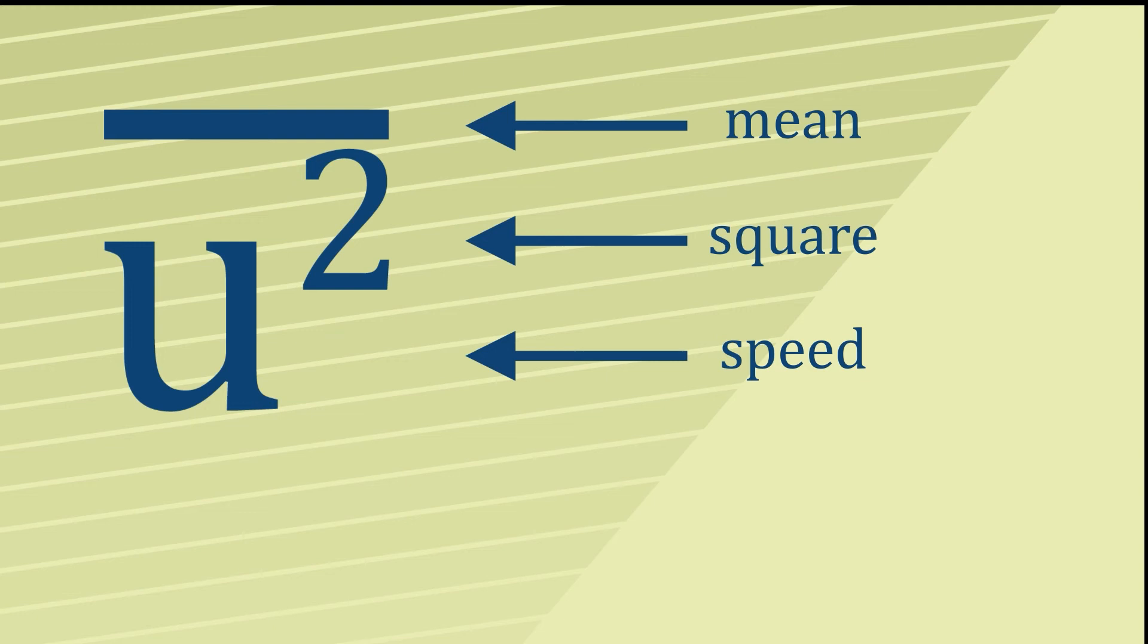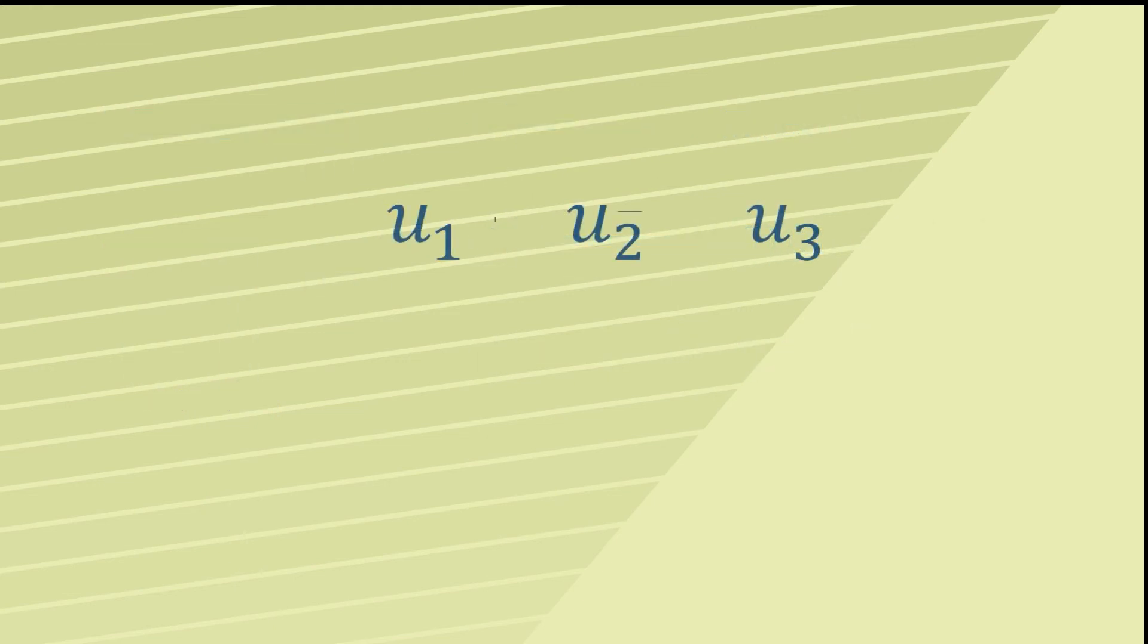This mean square speed is worked out by taking all the speeds, squaring them, adding them up, and then dividing by n, where n is the number of particles. In other words, it's just the mean of all the speeds squared.